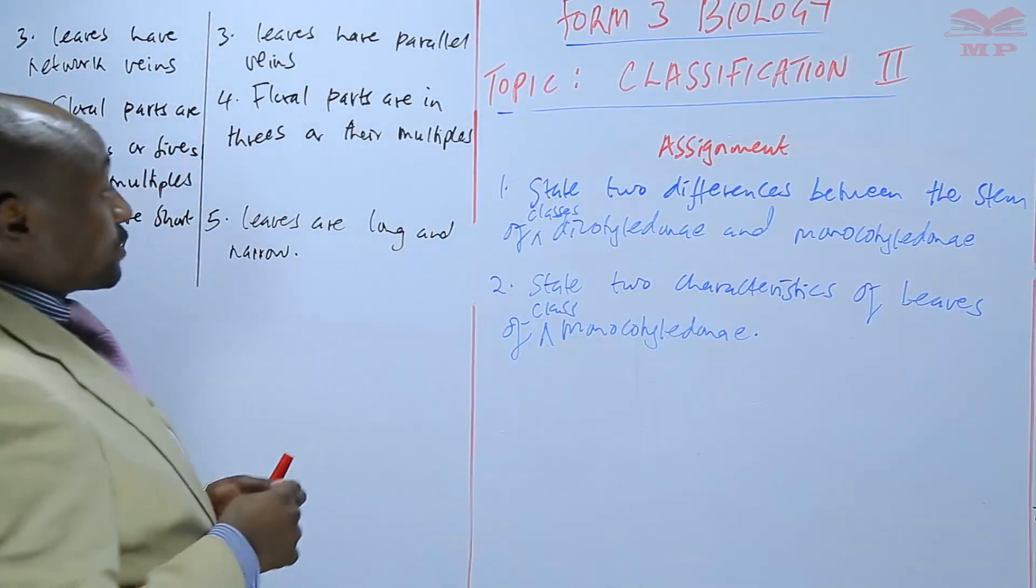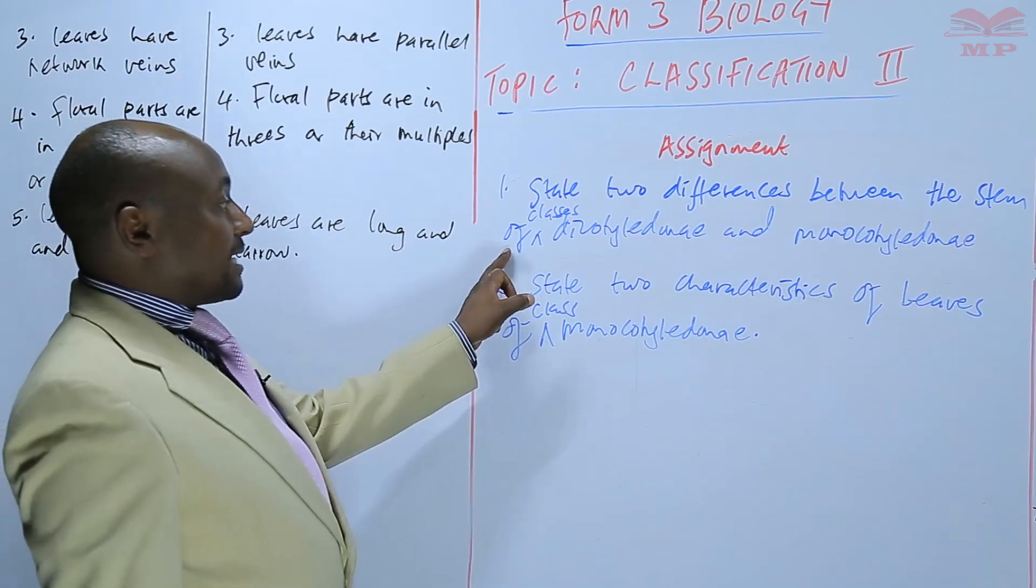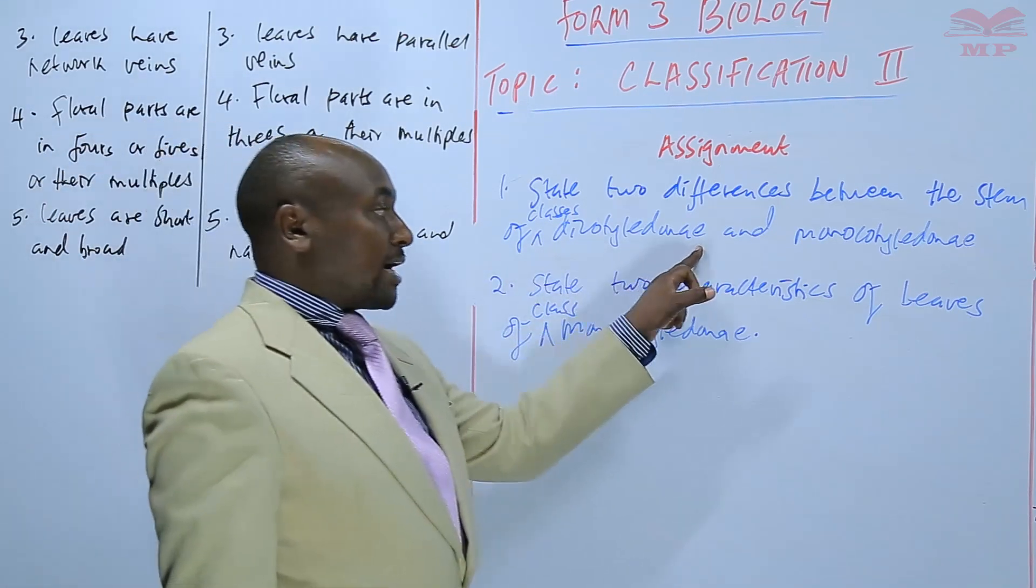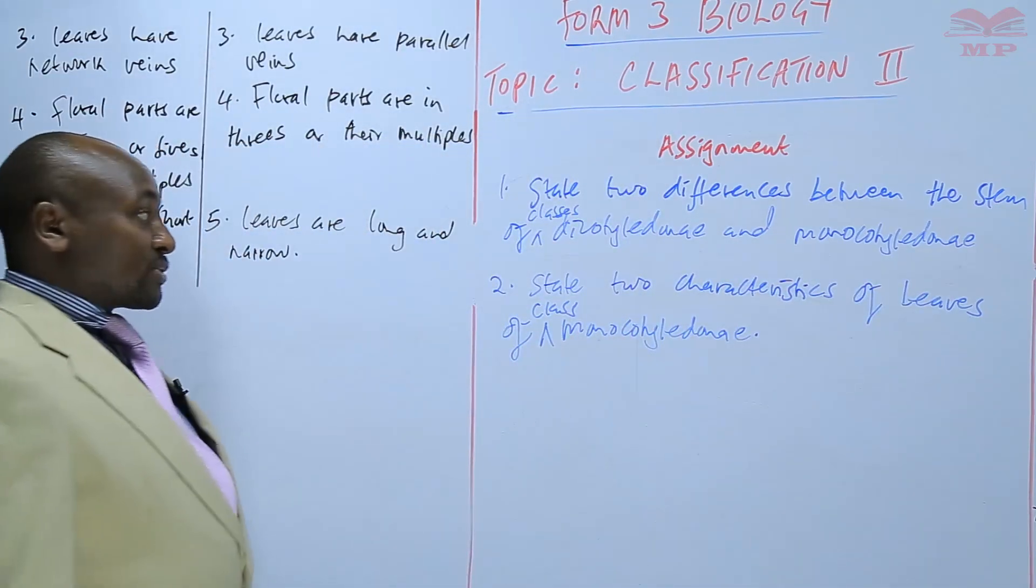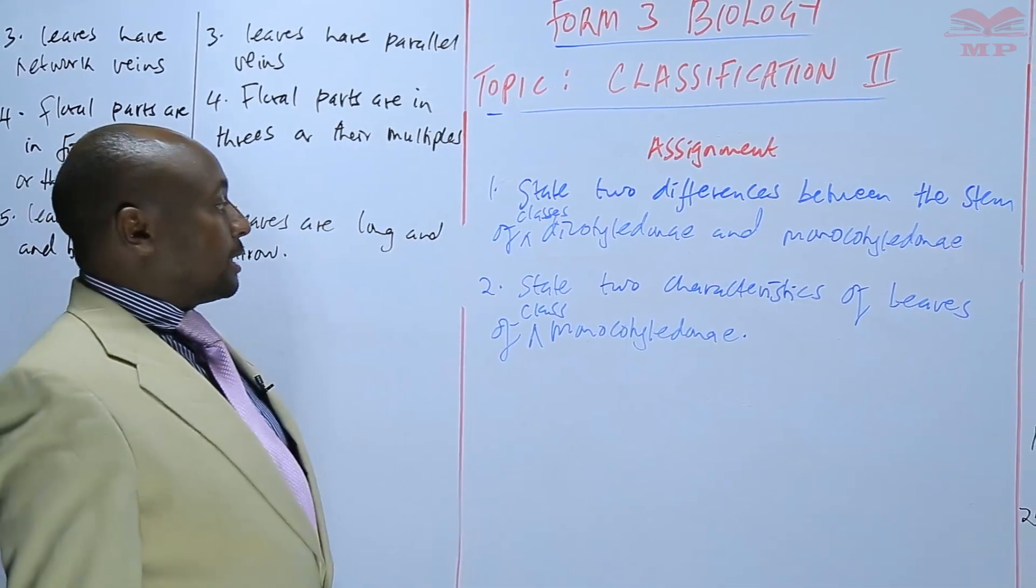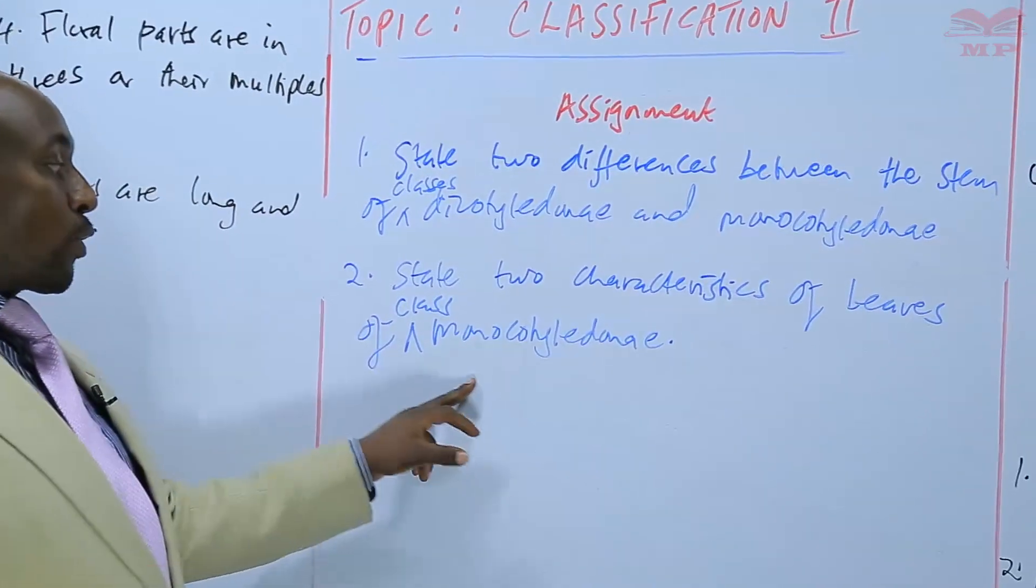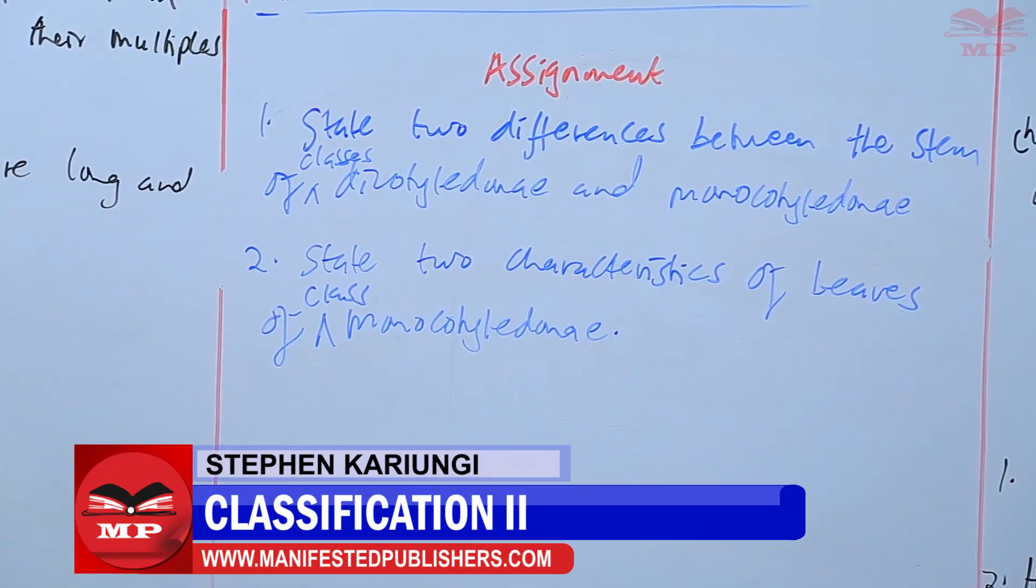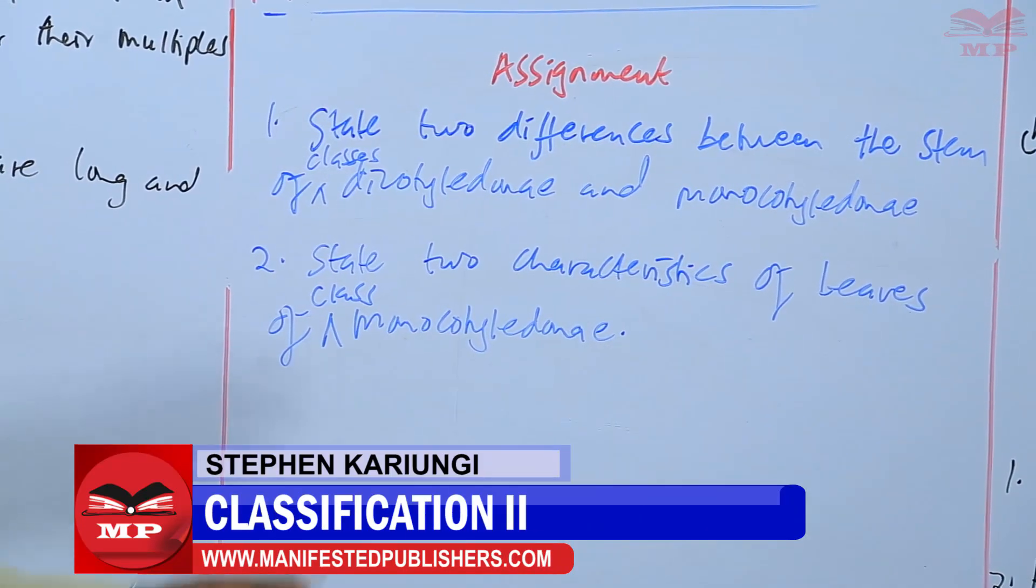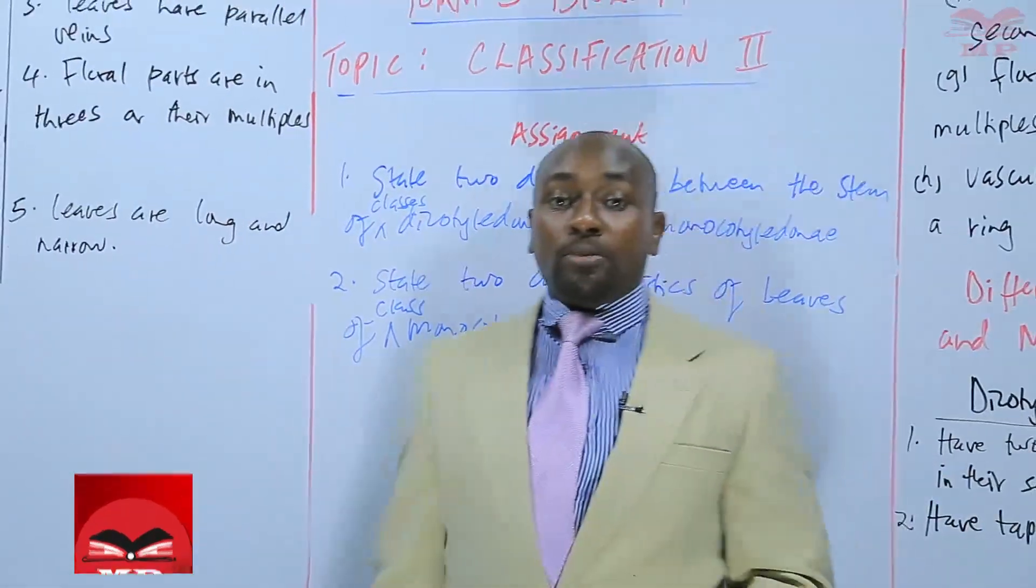The first question: state two differences between the stem of classes Dicotyledonae and Monocotyledonae. Two: state two characteristics of leaves of Class Monocotyledonae. So we'll stop there until next time. Goodbye.